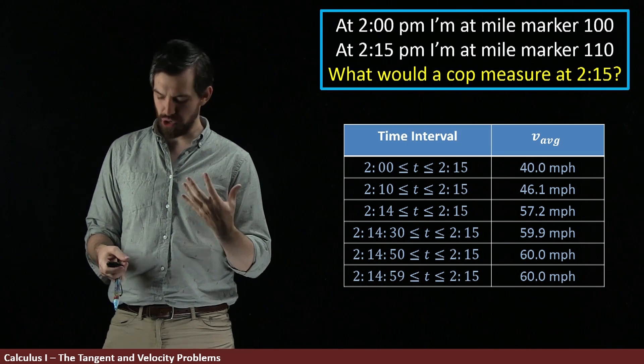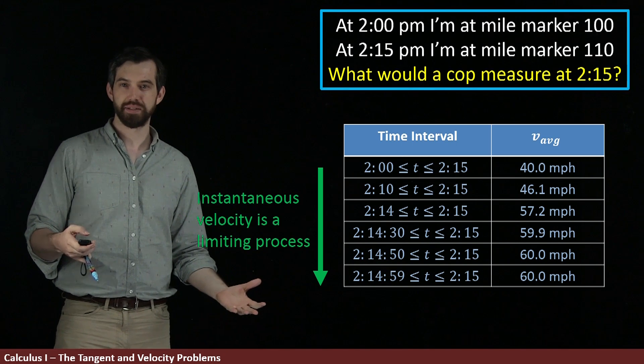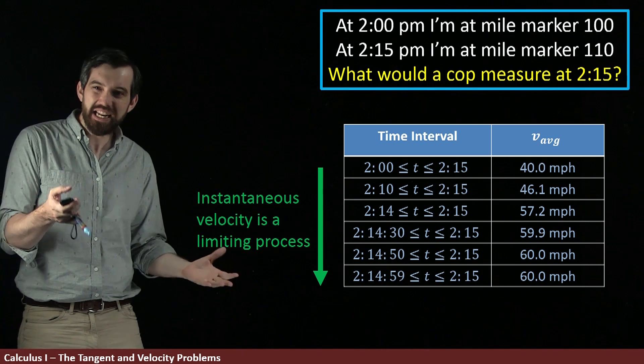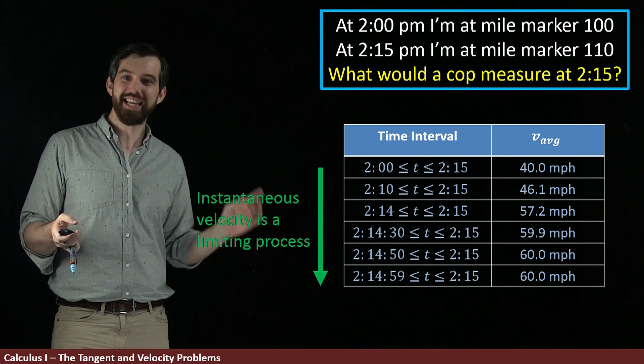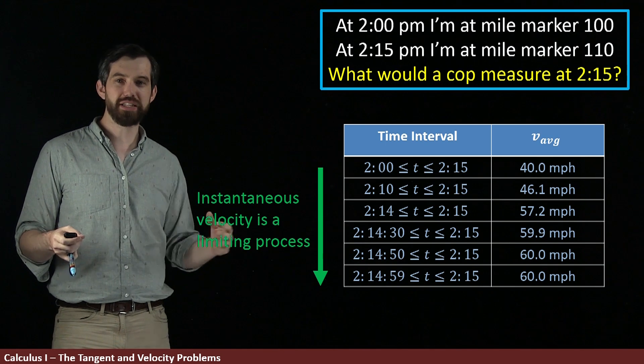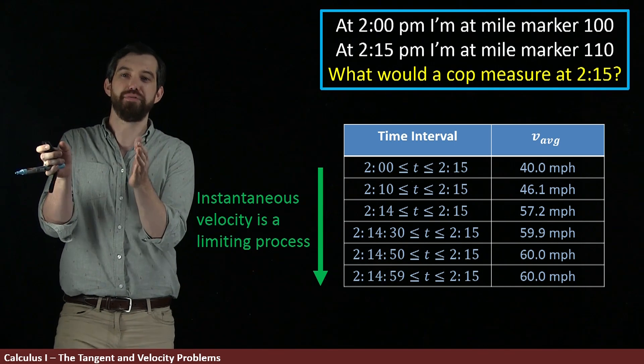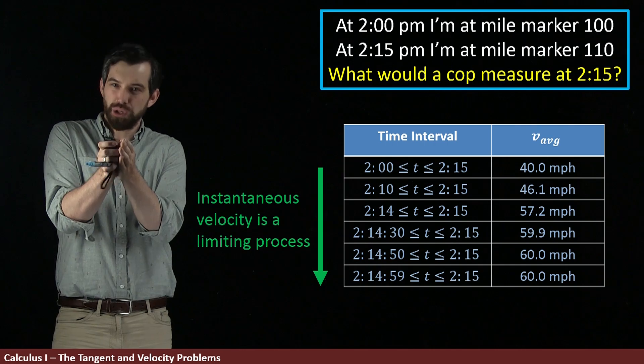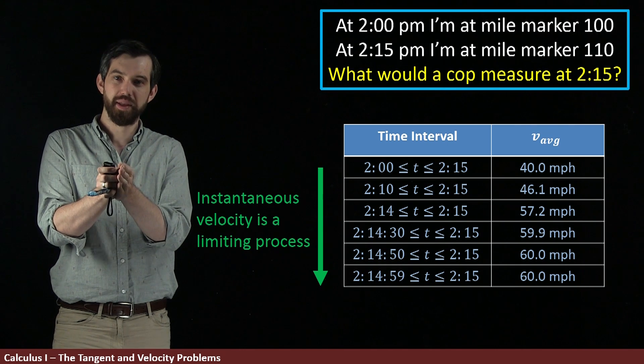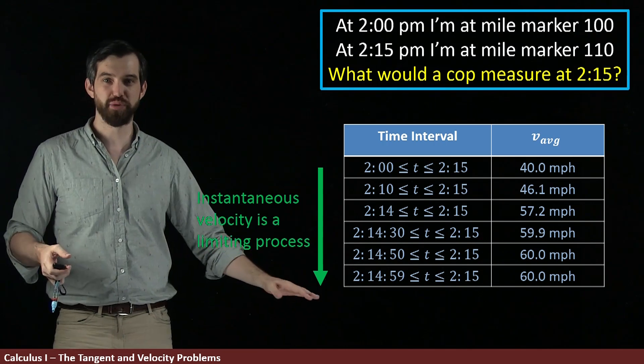So this leads me to a notion of a sort of limiting process. If I want to know the instantaneous velocity, that is the velocity exactly at 2:15, then what I'm going to do is look at smaller and smaller and smaller time intervals where the time interval is getting really, really, really close to 2:15.